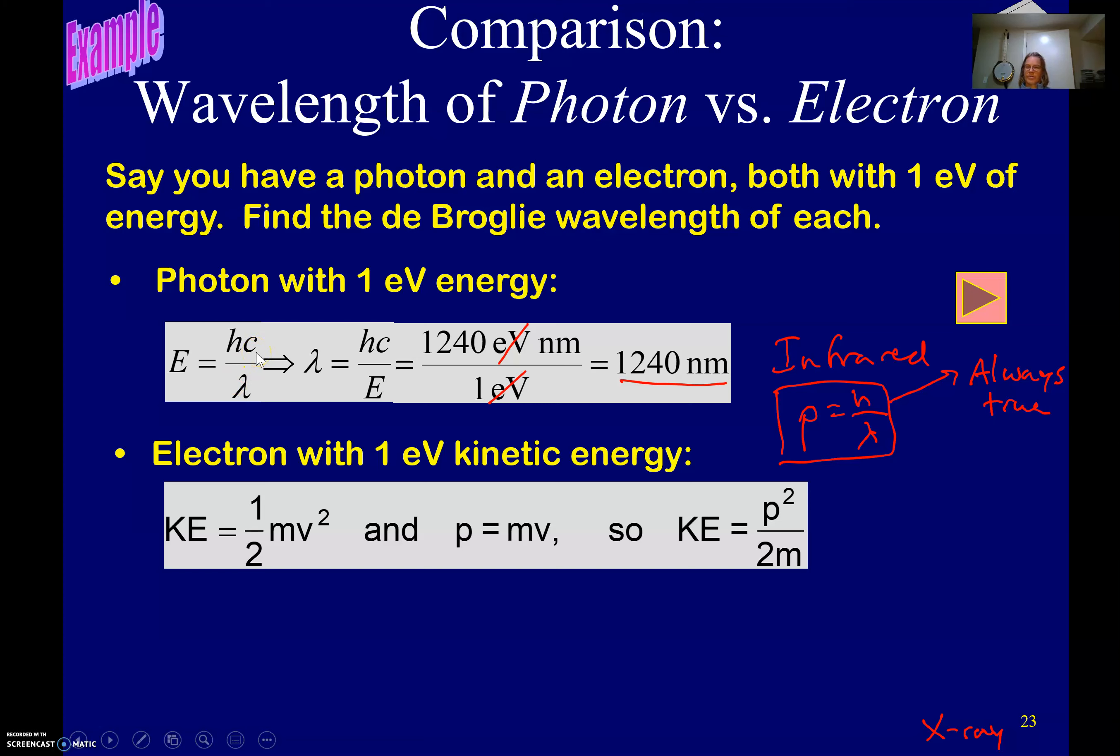We don't use that for particles because particles cannot go the speed of light, which is the c over there. And electromagnetic radiation does not go slower than the c, so we never use that for this because it doesn't have a rest mass.